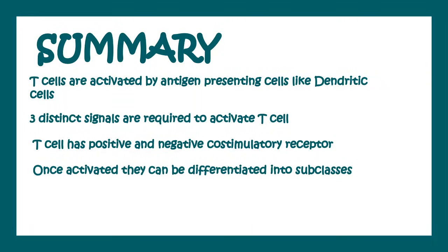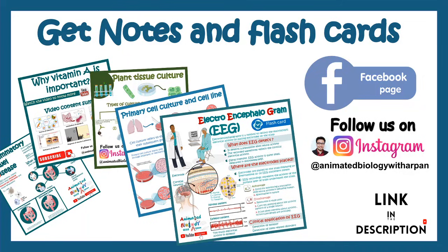In summary, we learned that T cell activation requires the interaction between antigen-presenting cells like dendritic cells and T cells. There are three distinct signals required for the activation of T cells. We learned about all of them, including the importance of the cytokine interleukin-2. We also looked at how T cells have positive and negative co-stimulatory receptors, and that once activated, they can be differentiated into different subclasses.